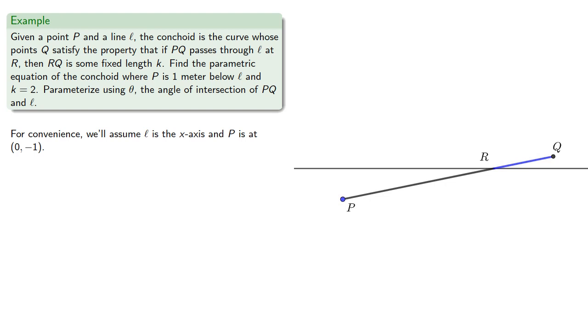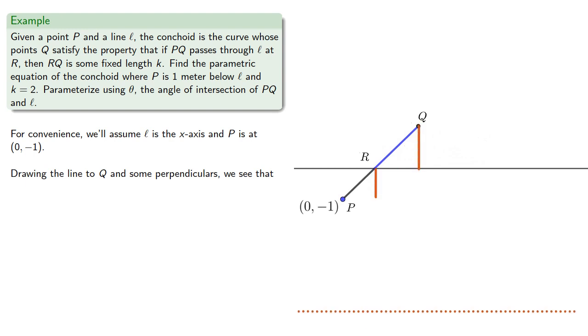For convenience we'll assume that our line L is the x-axis and P is at the point (0, -1). Notice that as angle θ changes the location of Q also changes. Drawing the line to Q and some perpendiculars, and remember we're assuming that RQ has length 2.